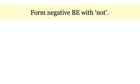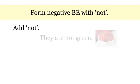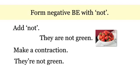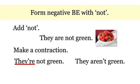Now you know. Form negative Be with 'not.' Add 'not,' like 'they are not green.' Or make a contraction: 'they're not green' or 'they aren't green.' And remember, 'they're' and 'aren't' both have the Be verb and the word 'not.'